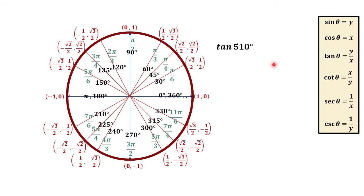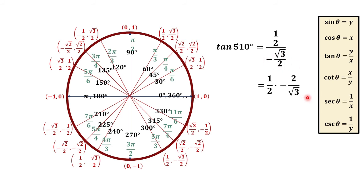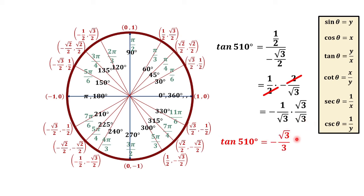For tangent 510 degrees, 510 degrees and 150 degrees are coterminal angles, since 360 plus 150 gives 510 degrees. Tangent is y over x, so we use the coordinates of 150 degrees. We have one-half over negative square root of 3 over 2. Multiplying by the reciprocal gives negative 2 over square root of 3. The 2's cancel, giving negative 1 over square root of 3. Rationalizing by multiplying by square root of 3 over square root of 3, tangent 510 degrees is equal to negative square root of 3 over 3.